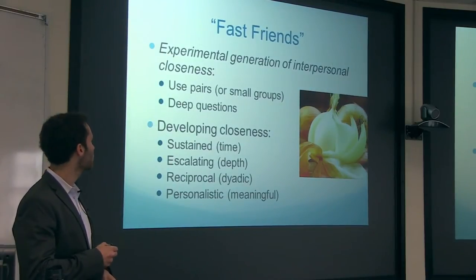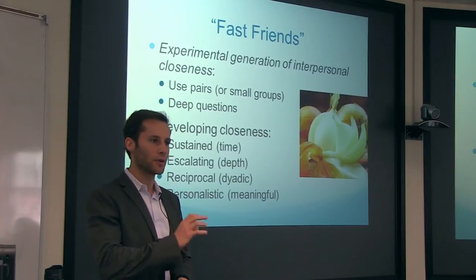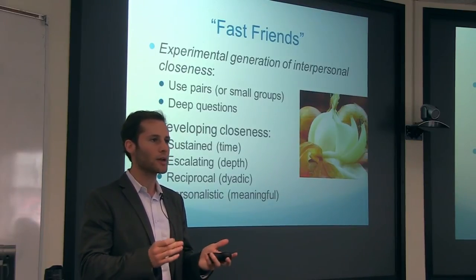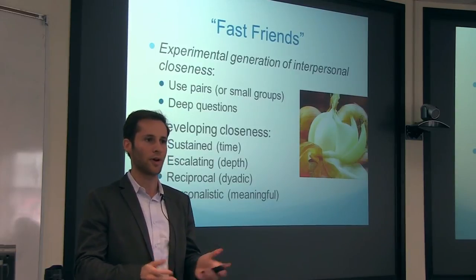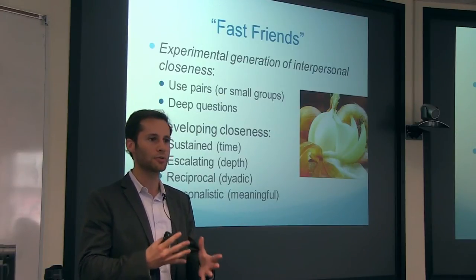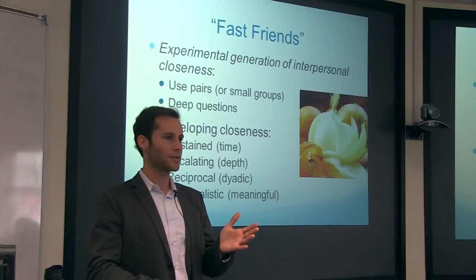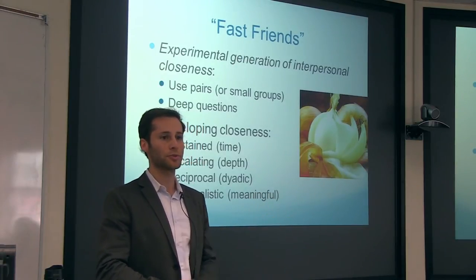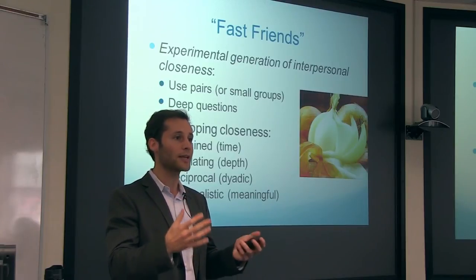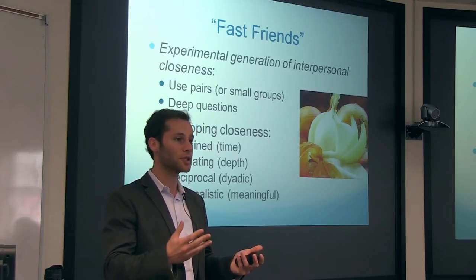This is the paper: 'Experimental Generation of Interpersonal Closeness.' One of the main differences between Fast Friends and other icebreaker activities is that you split people into pairs or small groups. Groups of three are fine; more than three in this short time period makes it tough to get good responses. The procedure is designed to take 45 minutes.